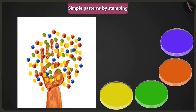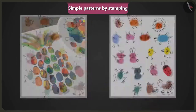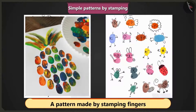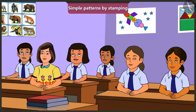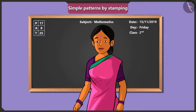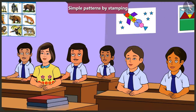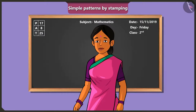Now, tell me, what do you think this is? Wow, ma'am, this is a picture of a tree. Yes, you are right, Jimmy. Children, look at these patterns — these were made by using fingers as stamps. Ma'am, this is very easy. There are several other ways by which you can create patterns by stamping. Come on, now let me show you patterns created using different types of objects as stamps.